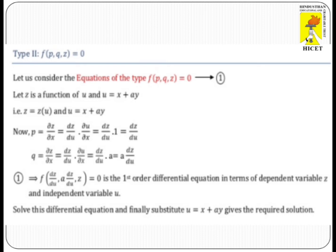From U, we find dou U by dou Y, and we substitute to get Q equals A times DZ/DU.